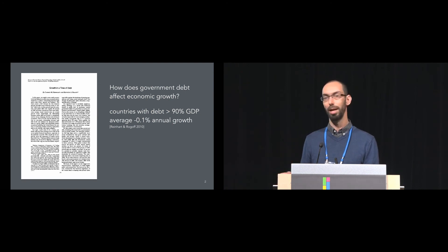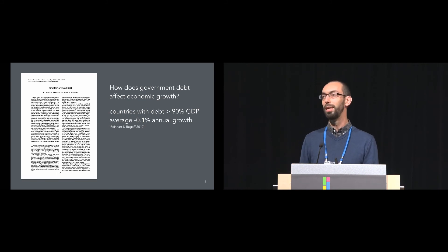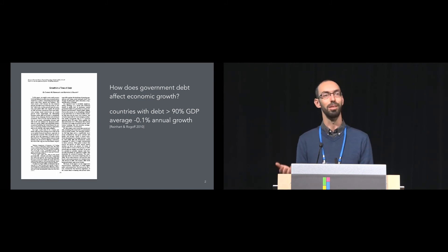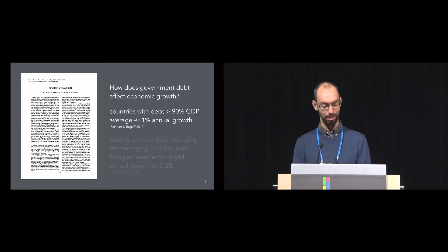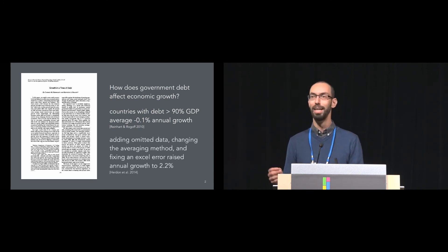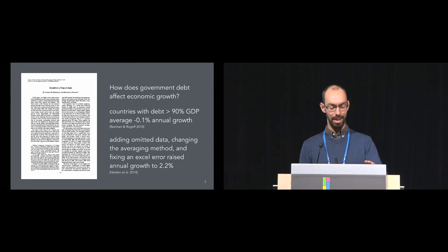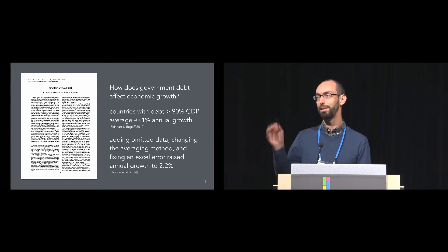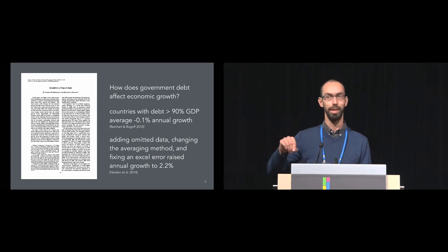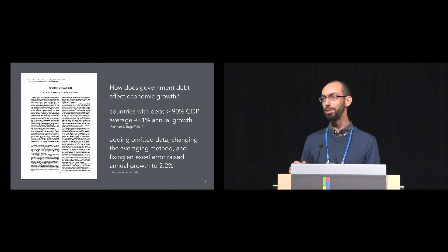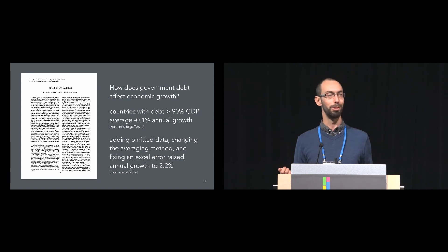The only problem is nobody could get the same figure. Many groups tried to follow the steps listed in the paper and kept getting different numbers. Finally, one group asked the original authors to send their analysis scripts. Upon receiving the Excel file, they realized that if they added some omitted data, changed the averaging method, and fixed an error where the averaging function hadn't been dragged all the way down the column, they got a much different number — a rather healthy growth of 2.2 percent.